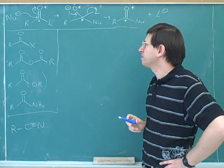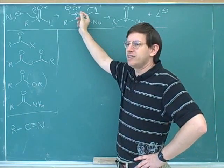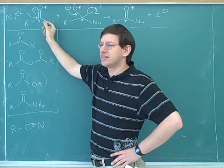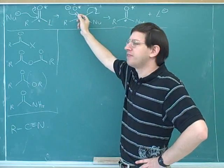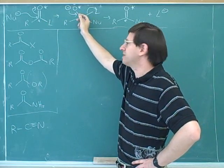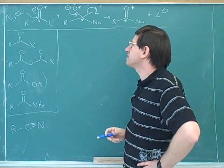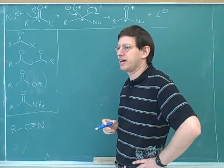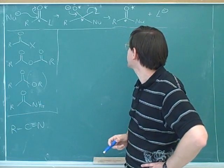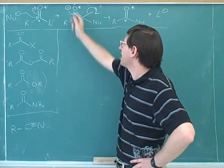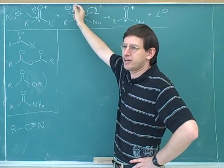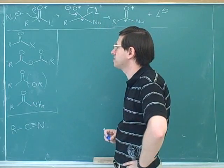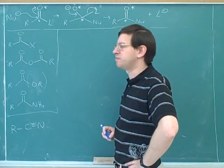The biggest mistake that I find people make is at this point they lose track of who the L group is. It's very easy to see the L group in the original structure, but when we have the tetrahedral intermediate, it's easy to forget who the L group is. Students often mistakenly kick off the oxygen because that sometimes happens with aldehydes and ketones. But for carboxylic acids and acid derivatives, we're usually not going to kick off that oxygen — that's why it helps to asterisk it. We're just going to reform the carbonyl and kick off the L group. At the beginning of the reaction, you have to ask yourself: who is the L group going to be?